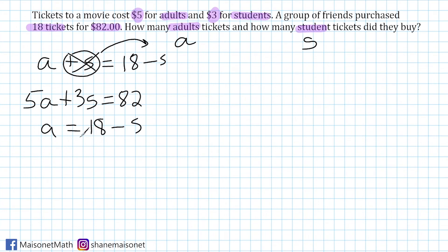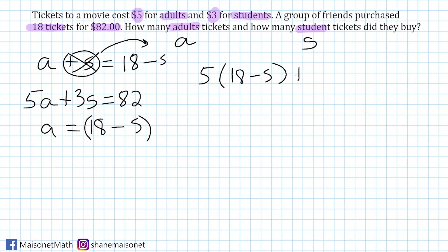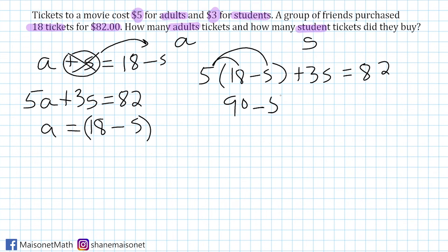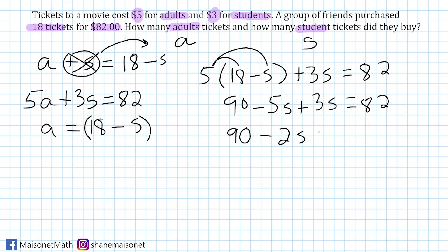Now that we know A equals 18 minus S, I'm going to substitute 18 minus S in for A in the other equation. So we get: 5 times (18 minus S) plus 3S equals 82. Distributing the 5: 5 times 18 is 90, and 5 times negative S is negative 5S, plus 3S equals 82. Combining the variable terms on the left: negative 5S plus 3S is negative 2S, so we have 90 minus 2S equals 82.